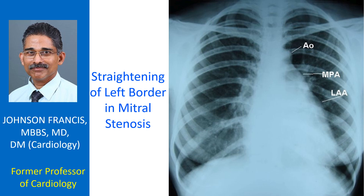In another case reported by Kapoor et al., gross biatrial enlargement caused the major portion of the cardiac shadow to be on the right side of the thorax, mimicking dextrocardia. The left heart border was straight.